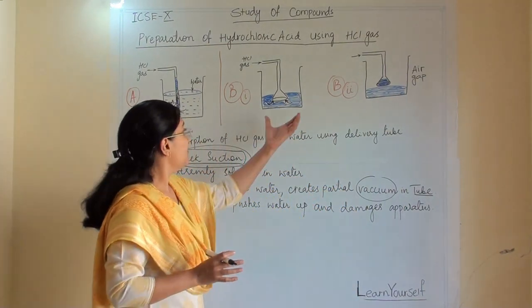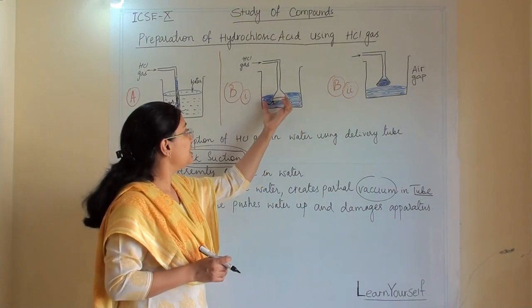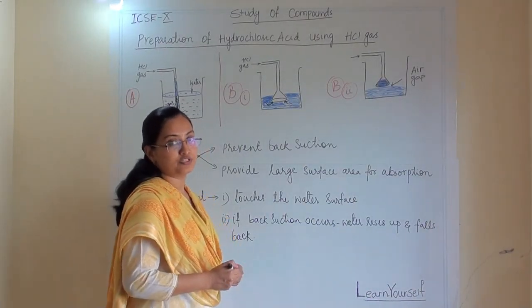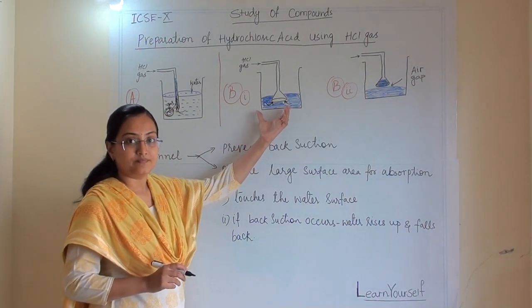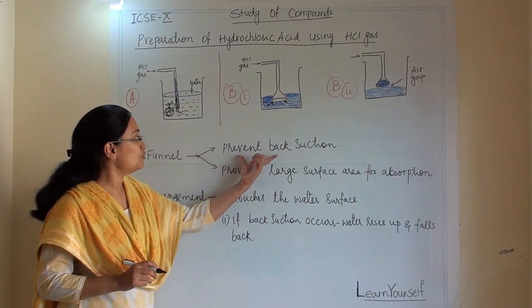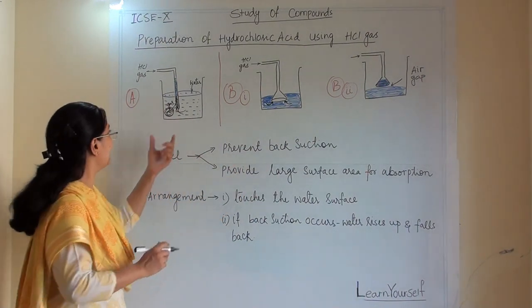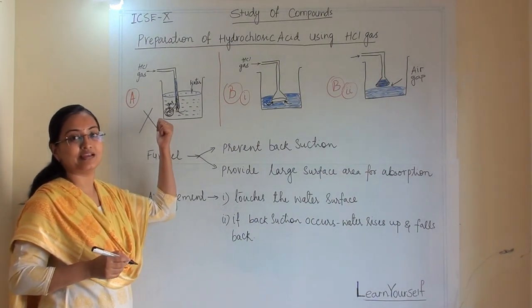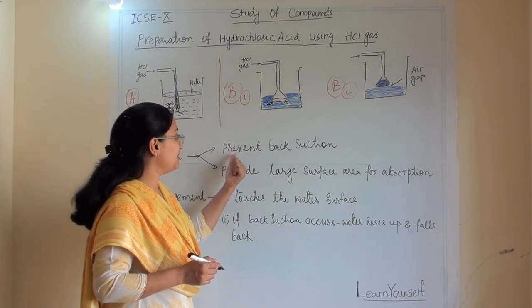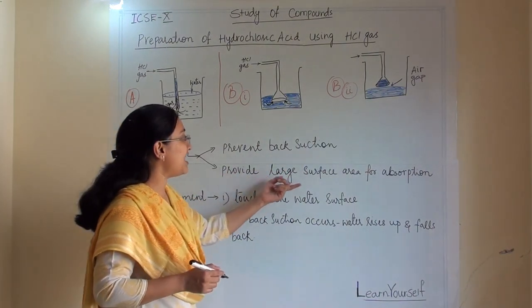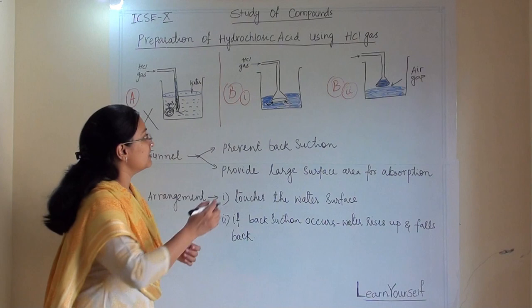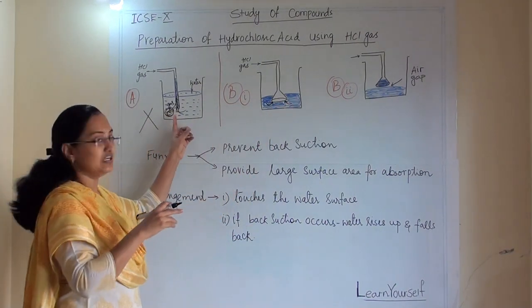That is why we have to use process B, in which we are using a funnel. In this second procedure we have arranged a funnel to prevent back suction, which we saw in figure A. With this funnel arrangement we can prevent back suction. The second advantage is it provides a large surface area for absorption, so our process will be fast. The funnel surface area is large compared to the delivery tube, so the gas will get a large surface area over the water.